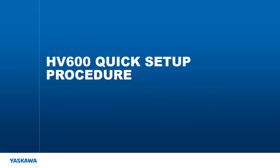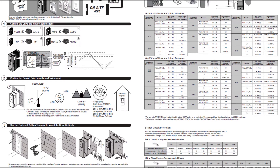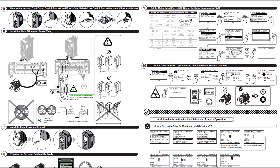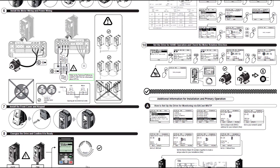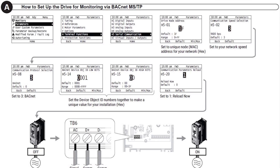Yaskawa has taken the steps to make connecting and communicating easy. Included with the HV600 product, you'll find a large fold-out quick setup procedure that makes the complicated simple. With easy-to-understand graphics, the procedure focuses on tasks all of our customers will perform with AC drives. In this ELM, we'll be focusing on additional procedure A: how to set up the drive for monitoring via BACnet MSTP.